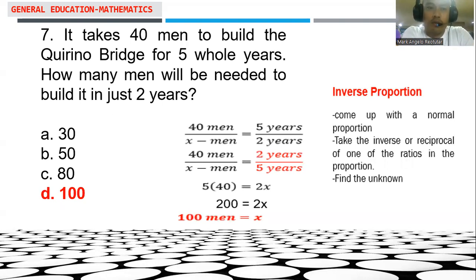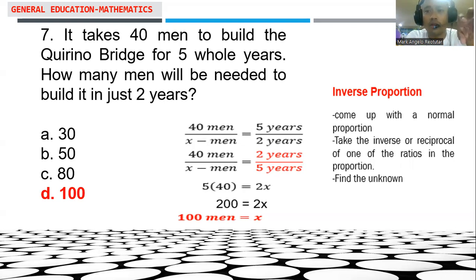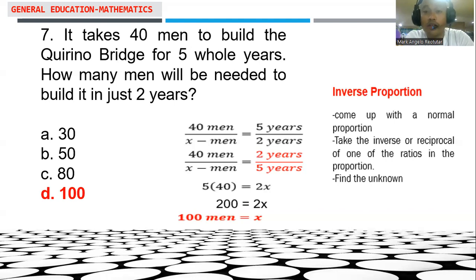Considering problem number 7, this is an application of inverse proportion. When we say inverse proportion, we are looking for the inverse of an original proportion. First, come up with a normal proportion as your original. Then take the inverse or reciprocal of one of the ratios in the proportion and find the unknown.